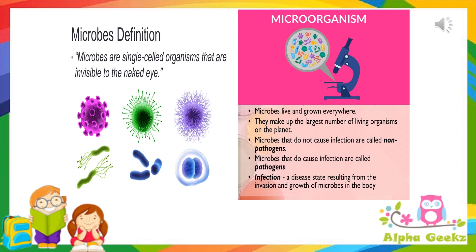They make up the largest number of living organisms on the planet. They can grow in soil, water and inside or outside our body. Microbes that do not cause infection are called non-pathogens and microbes that cause infection are called pathogens. Infection is a disease state resulting from the invasion and growth of microbes in the body.